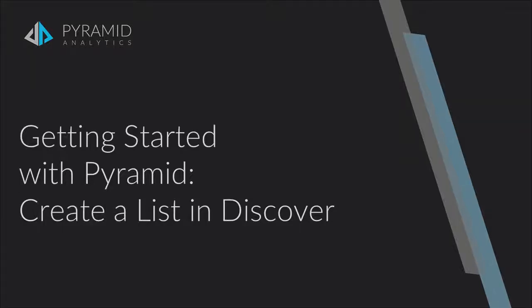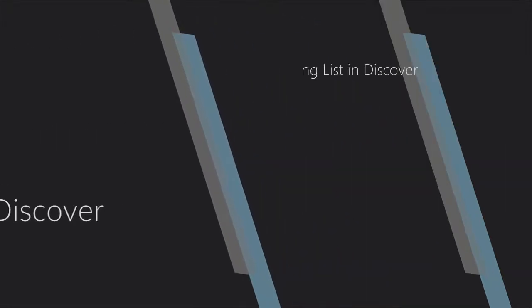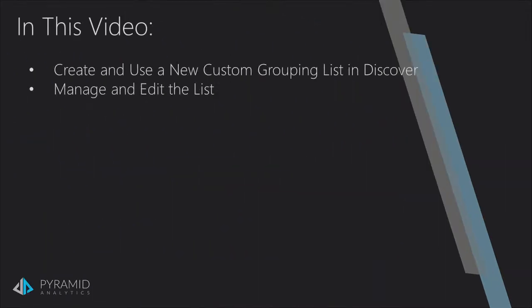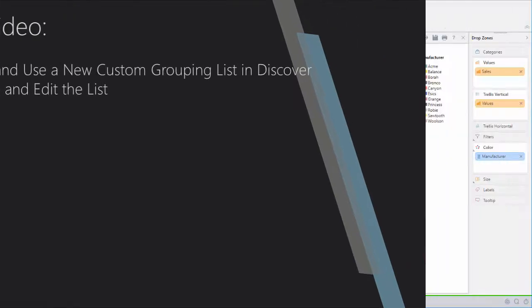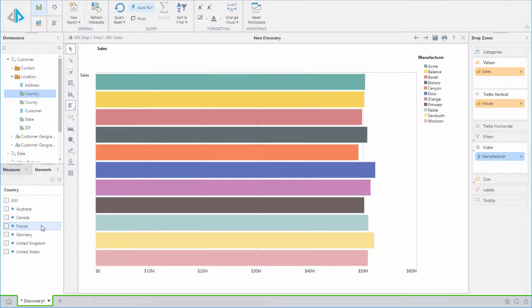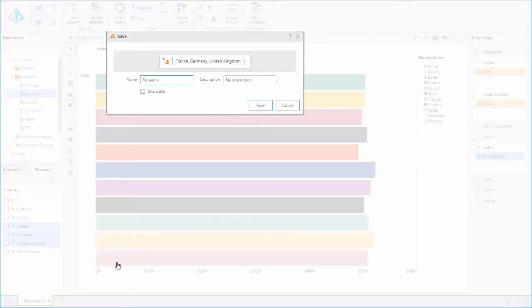Welcome to the Getting Started with Pyramid tutorial series. This video describes how to create reusable business logic from right within the Discover module. In this video, we will create and use a new custom grouping list in Discover, and manage and edit the list. The benefit of creating a list in Discover is that we can define our own custom grouping and opt to share that for reuse in other reports and by other users without having to jump out of our workflow.